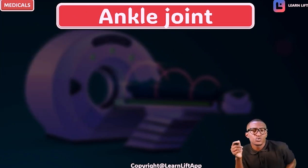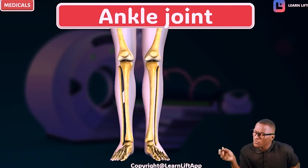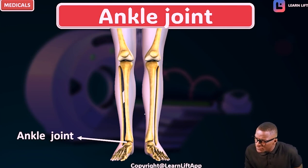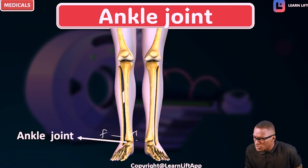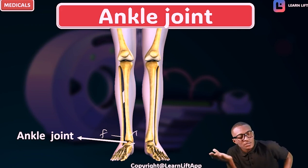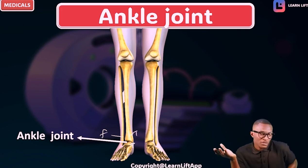The next joint is the ankle joint. The ankle joint is formed by the talus bone of the foot, the tibia bone, as well as part of the fibula bone. So fibula, tibia, and the talus. Let's talk about the malleoli.